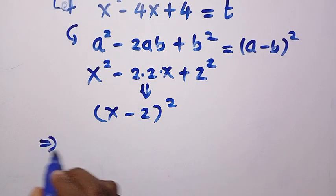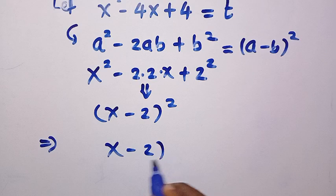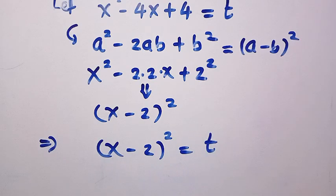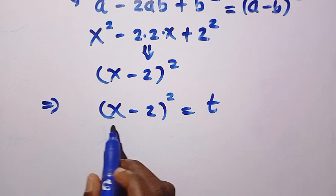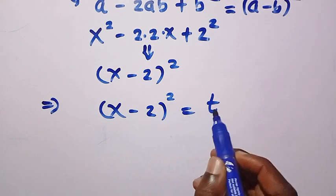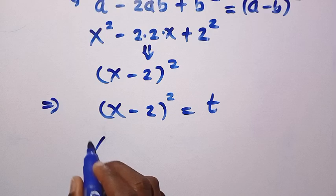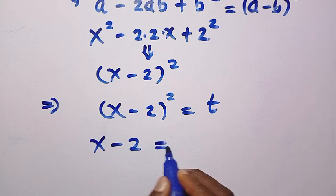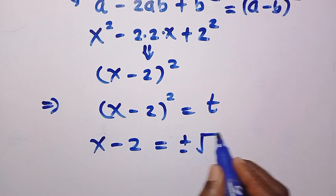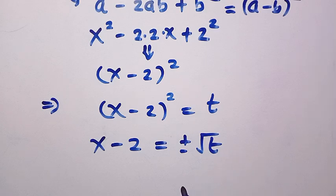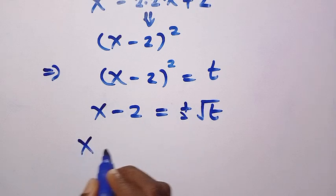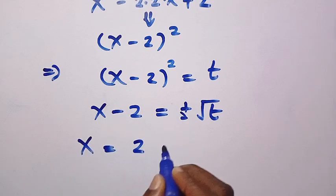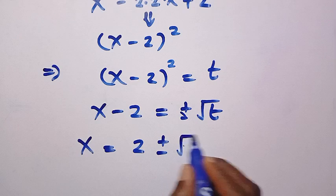So we let (x minus 2) squared equal t, and we want to make x the subject. Taking the square root of both sides gives x minus 2 equals plus or minus the square root of t, where t is greater than or equal to 0. Adding 2 to both sides gives x equals 2 plus or minus the square root of t.